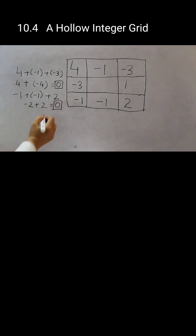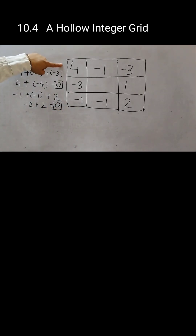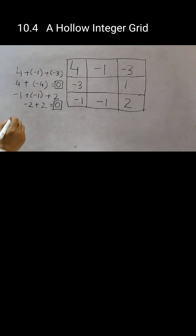Now we will check the left column: 4, minus 3, minus 1. Add up all the numbers — 4 plus minus 4 is 0.